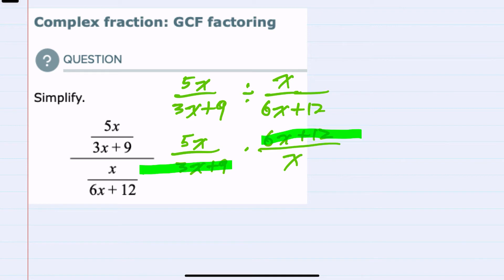So in both of these expressions, I can factor out a greatest common factor. I can factor out a 3 in the bottom and a 6 in the top.